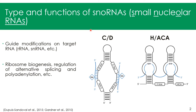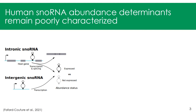They are involved in a myriad of functions such as ribosome biogenesis and the regulation of alternative splicing. In humans, SNORNAs are either encoded within introns of genes called the host gene, or within intergenic regions, and out of these two genomic contexts a SNORNA can either be expressed or not expressed — I will refer to this as the SNORNA's abundance status.